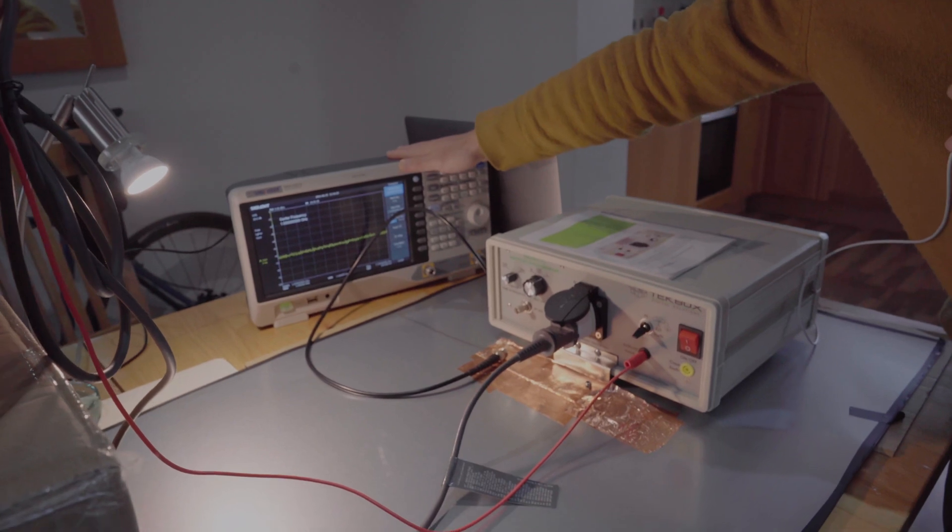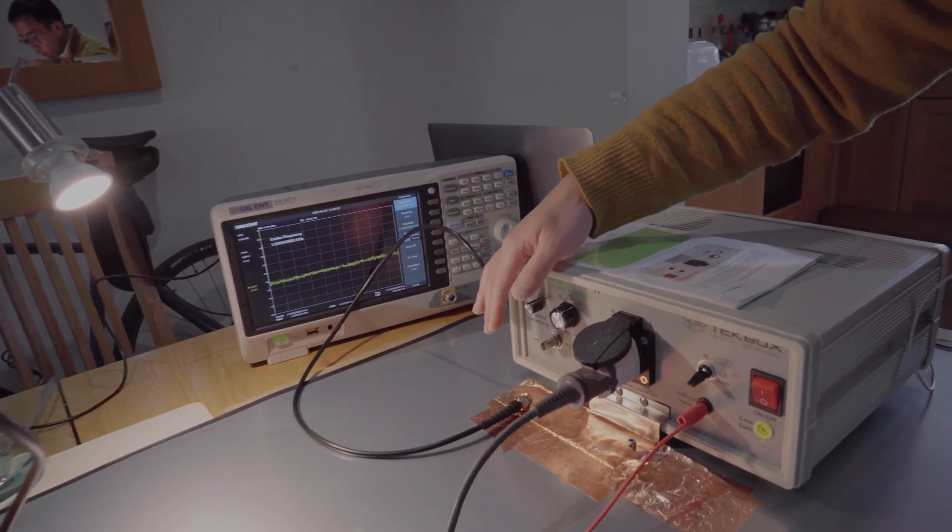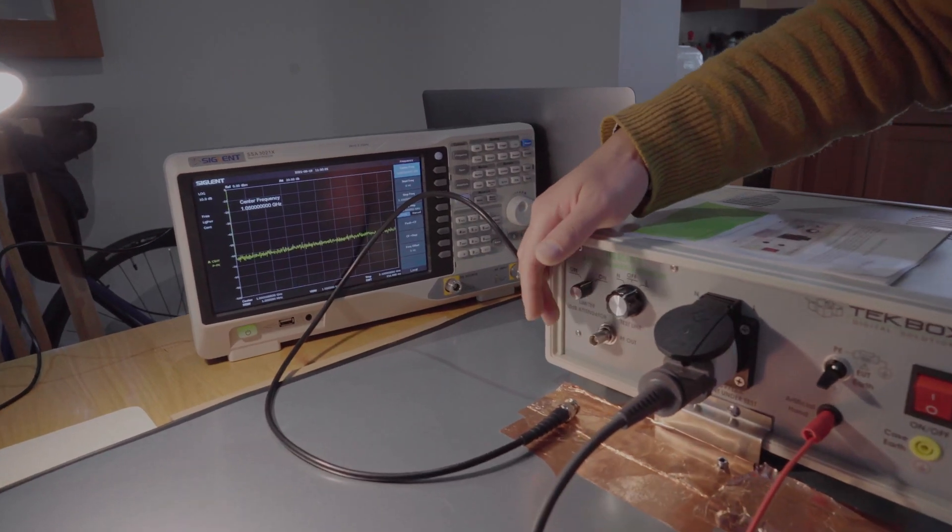And here, of course, you would need a spectrum analyzer to measure either the conducted noise on the line or on the neutral line.